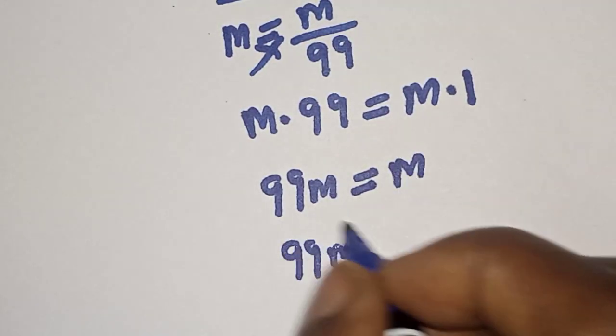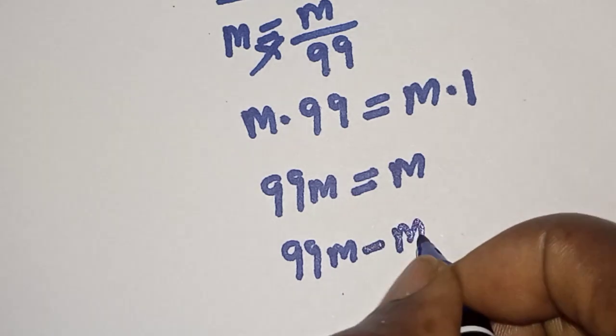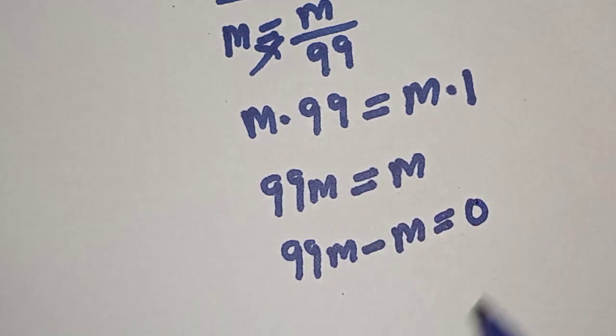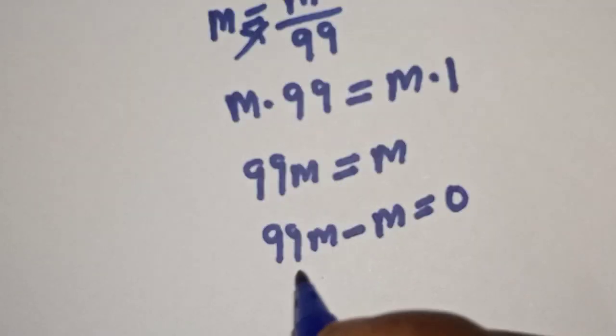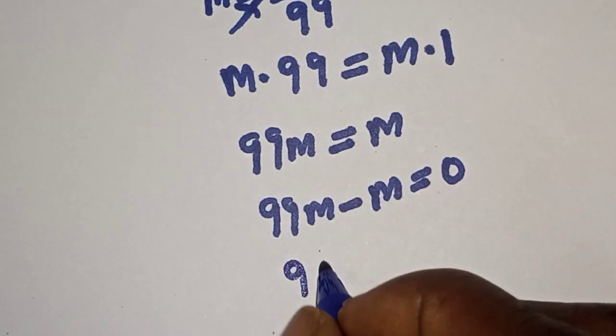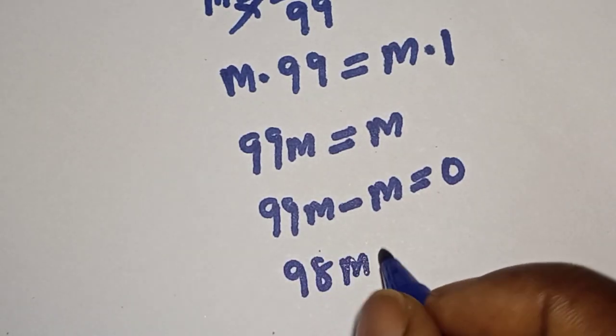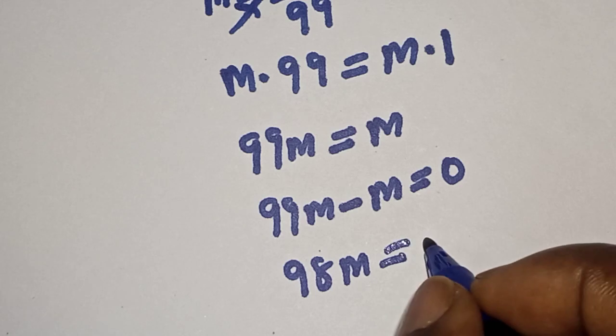Let's bring M to this side. We have 99M minus M equals 0. This gives us 98M equals 0.